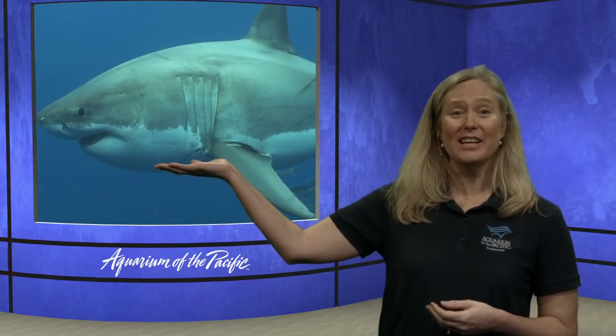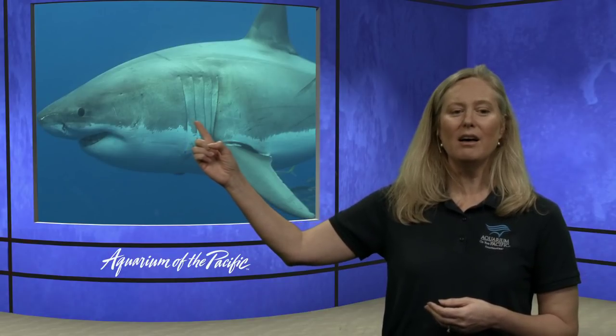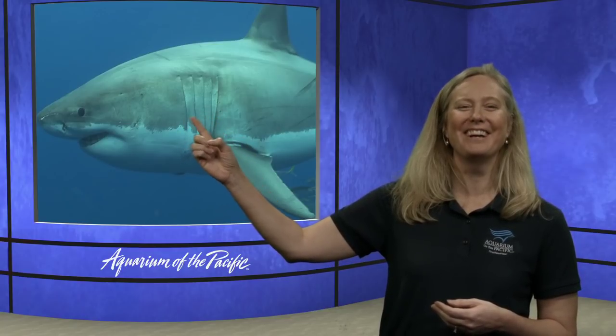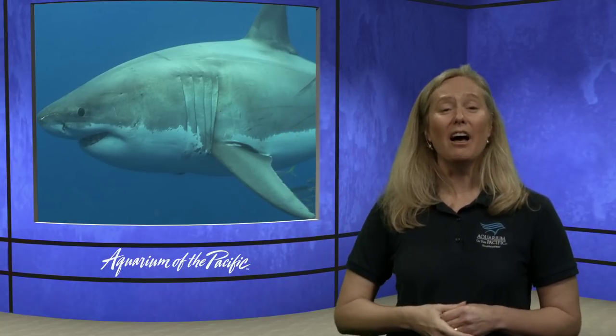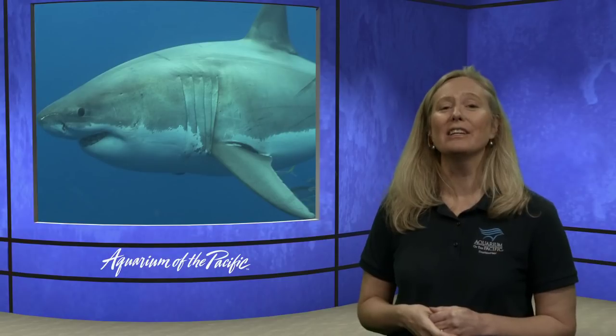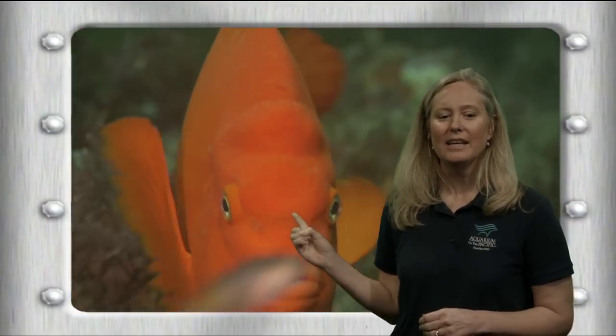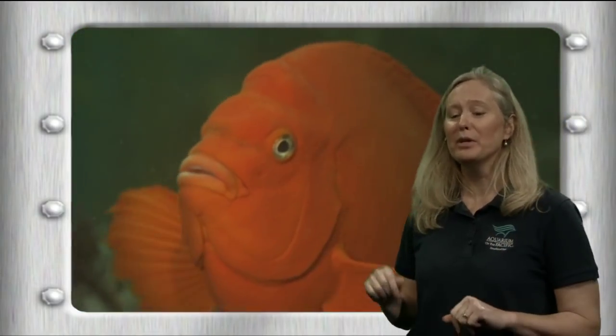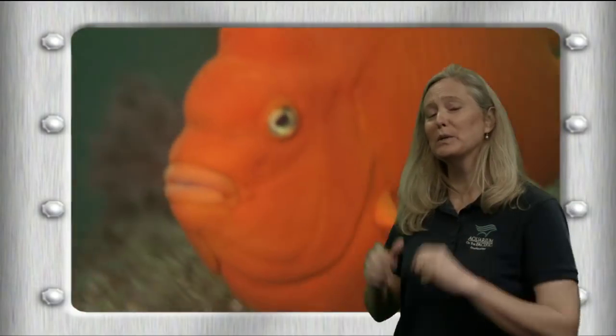Here you can see the gills on our shark — they have five gill slits on each side of their head to help them breathe. Other fish that aren't sharks have a covering, kind of like a backwards C shape, that protects their gills on the inside. But they both have gills. The Garibaldi brings water in through their mouth and out through their gills to breathe. Sharks can sometimes keep swimming so water flows over their gills.